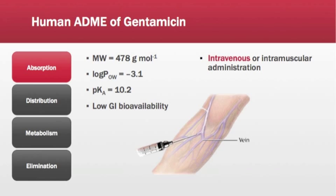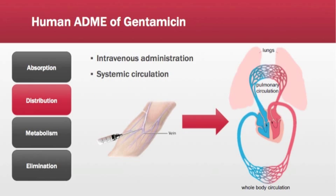I will focus on the intravenous administration of gentamicin. This allows the antibiotic directly into the bloodstream and gets around the trouble of crossing the gut epithelium. Once in systemic circulation, gentamicin can come into contact with any tissue. Gentamicin is polar and hydrophilic at physiological pH, and an organic cation due to its high pKa.